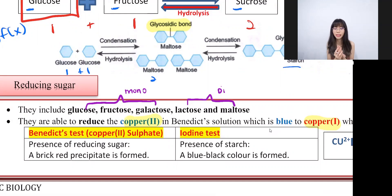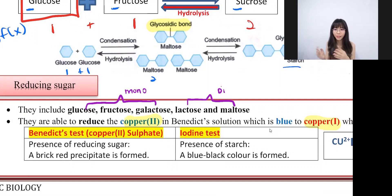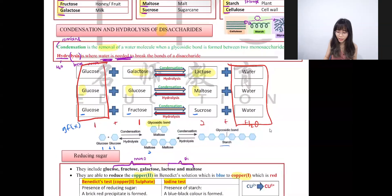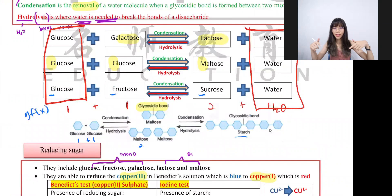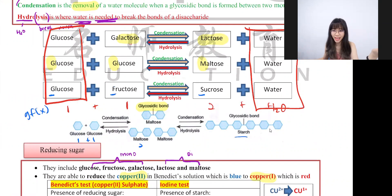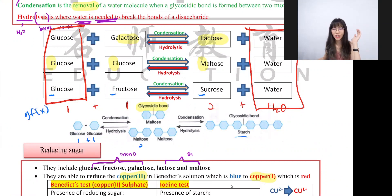The iodine test is used to test for the presence of starch. The original color of the iodine solution is brownish-yellow, and a positive result turns blue-black. There's also a fun experiment where you use your own saliva, which you'll get to do in school. That's all for carbohydrates today — any questions, comment below. See you next time, bye!